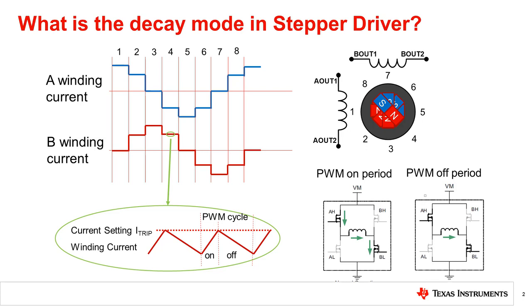After the winding current reaches each microstep current regulation point I-trip, H-bridge FETs disconnect the forward voltage source VM to the coil terminal to stop driving the winding current above I-trip.